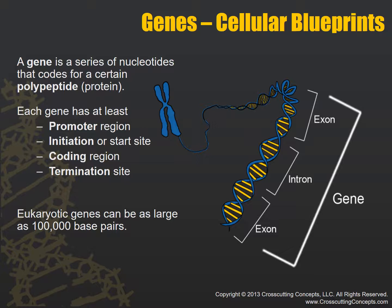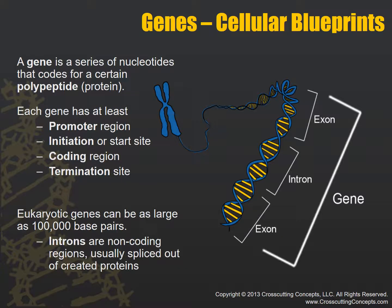In eukaryotes, genes can be as large as 100,000 base pairs. Within genes, we have introns, which are non-coding regions that are usually spliced or cut out when creating proteins. We also have exons, which are the coding regions. So introns are inserted and have to be spliced out, while exons are your coding region.